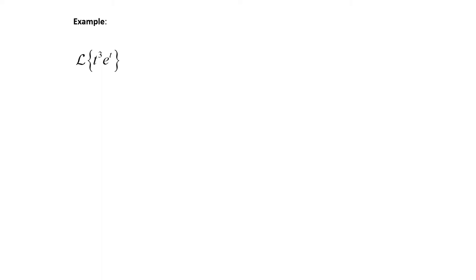Let's look at a couple of examples. We want to take the Laplace transform of t cubed times e to the t. This is a product of t to a power times an exponential. Since we have a product with an exponential, we could evaluate this using a translation theorem we've talked about in the past. But using today's theorem, with t to the third power, we're going to use n equals three.